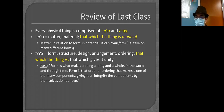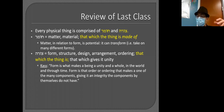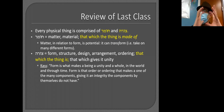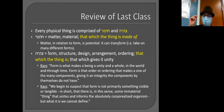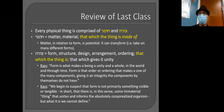Form is that order or ordering that makes a one of the many components, giving an integrity that the components by themselves do not have. With a phone — we call the whole thing a phone even though it's made out of glass, metal, plastic, and other stuff. The 'phone-ness' is what gives it its unity. It's a specific arrangement and more than just the sum of its parts. Kass also says form is not primarily something visible or tangible — you can't draw or touch it; in some sense there is an immaterial thing that unites the organism.